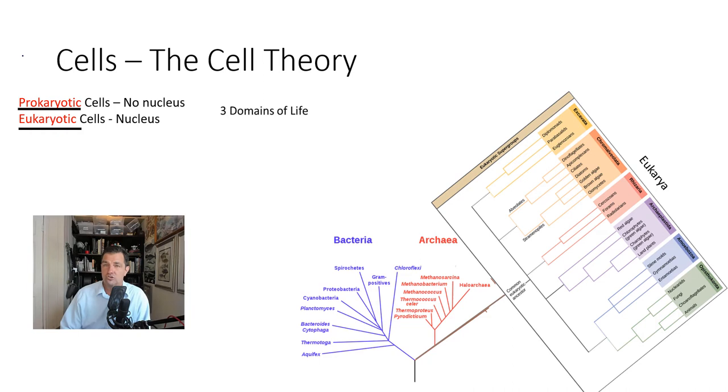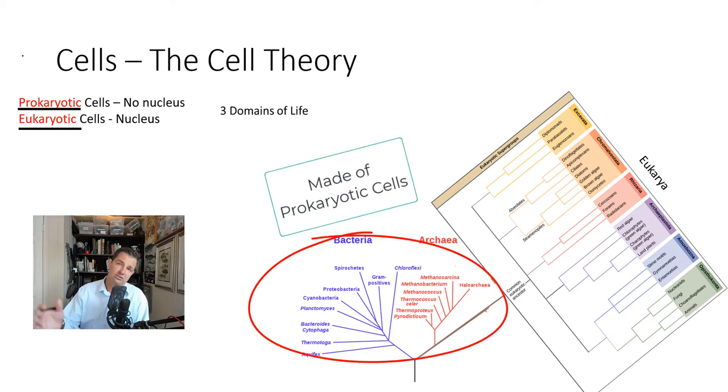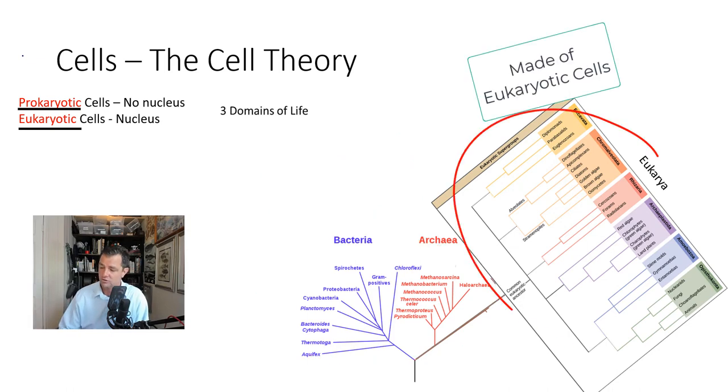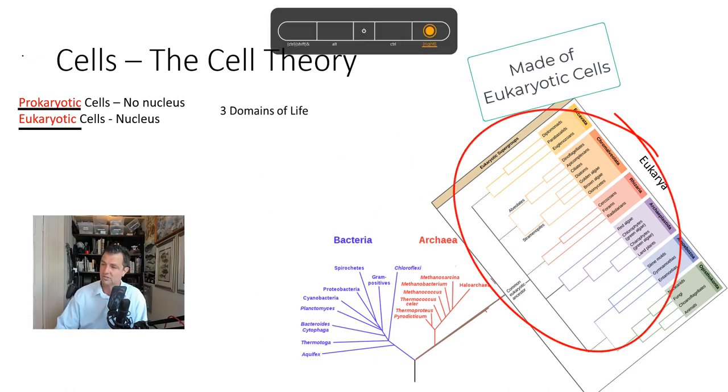Connecting our tree of life to this cell idea, we find that of the domain system, the bacteria and the archaea are both made up entirely of prokaryotic cells. Whereas the domain eukarya, as the name probably implies, is made up of eukaryotic cells.